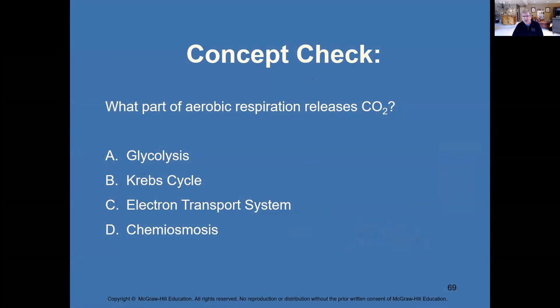Quick quiz: what part of aerobic respiration releases carbon dioxide — glycolysis, the citric acid cycle, electron transport, or chemiosmosis? The answer is the Krebs cycle (citric acid cycle).